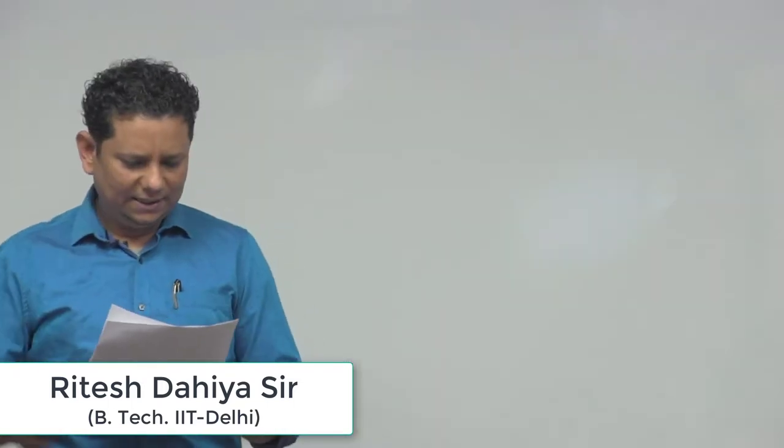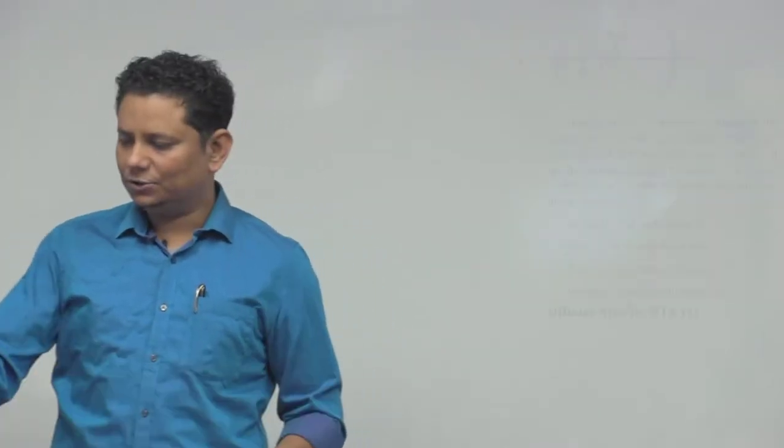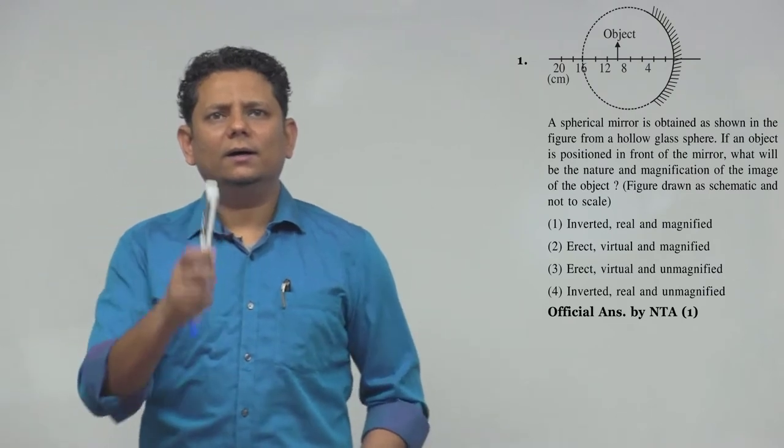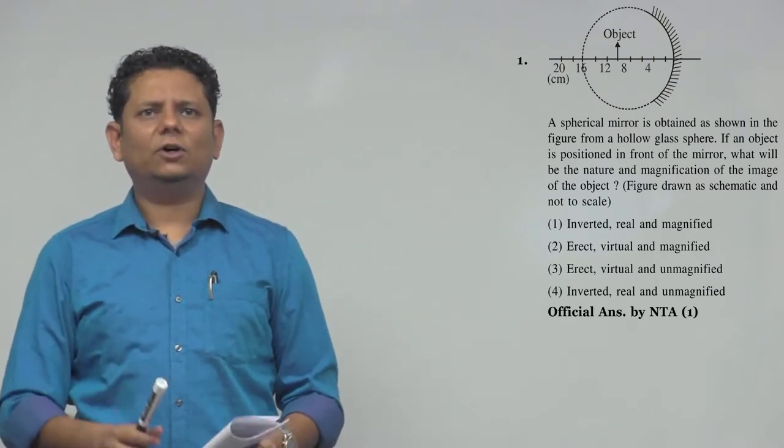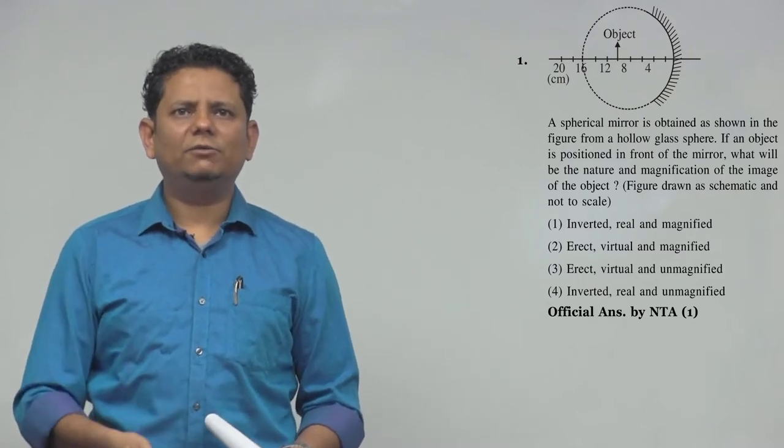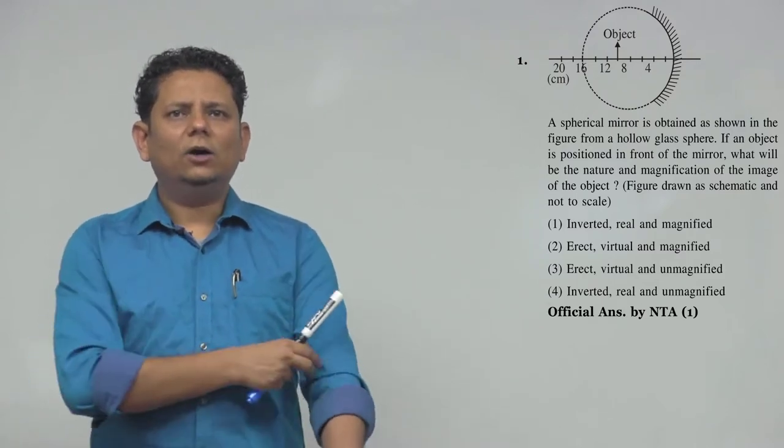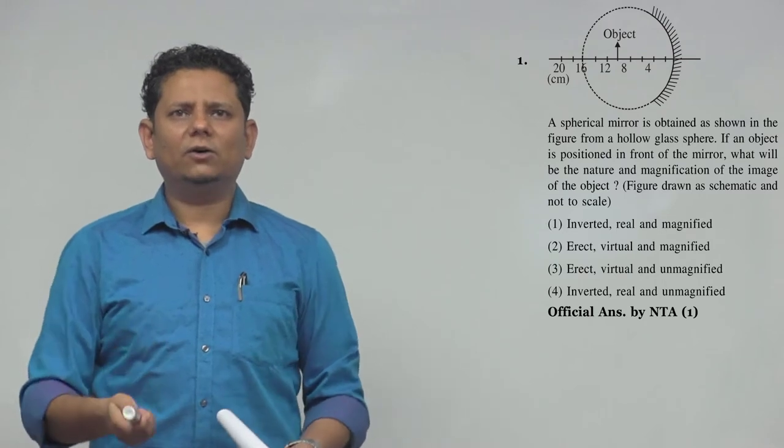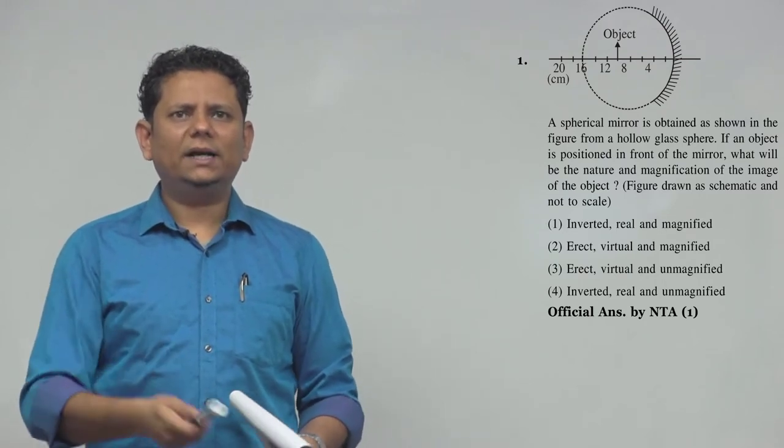Question number one says a spherical mirror is obtained as shown in the figure from a hollow glass sphere. If the object is positioned in front of the mirror, what will be the nature and magnification of the image of the object? Figure drawn as schematic and not to scale.